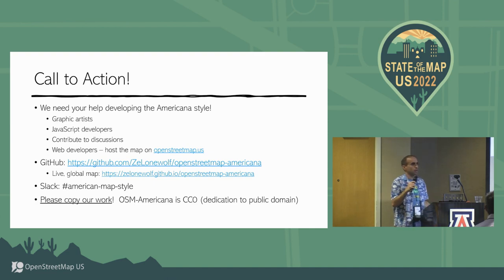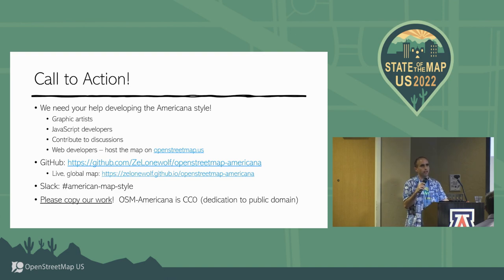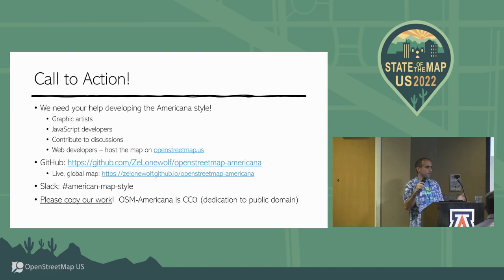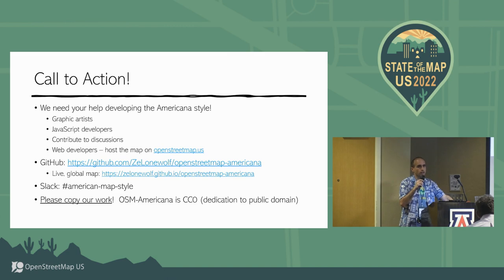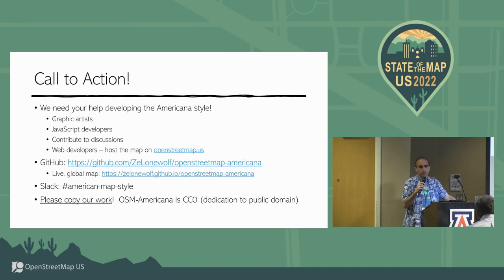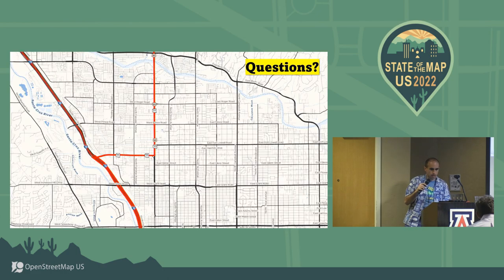I'd like to end with a call to action. This is a community collaborative project — my baby, but I want it to be the community's baby. I'm proud of all the people contributing styles, shields, and rendering features almost daily. We'd like to get this up on OpenStreetMap US as a centerpiece for cartography in our community. We have a GitHub with a global rendered tile server, and a Slack channel for American map style that's quite popular. We're CC0 licensed — dedicating this to the public domain. Our goal is that American-style cartography proliferate into open source maps as much as possible, so please copy our work, techniques, and graphics. It's all there for you to use.